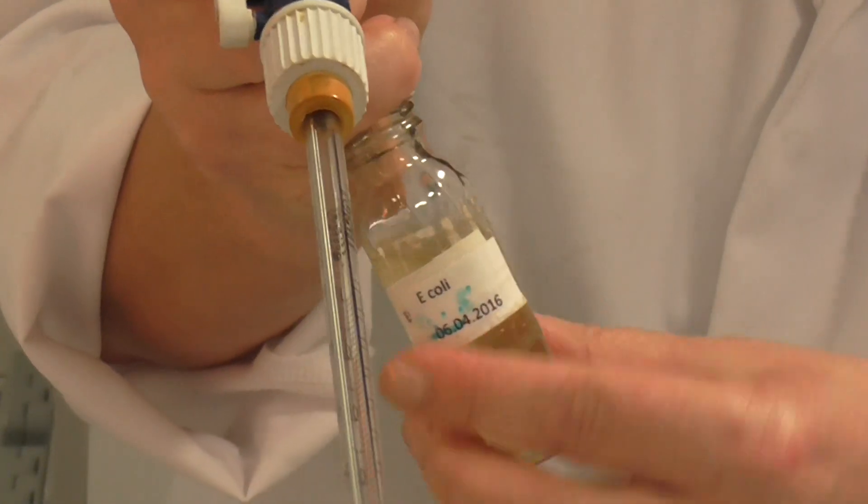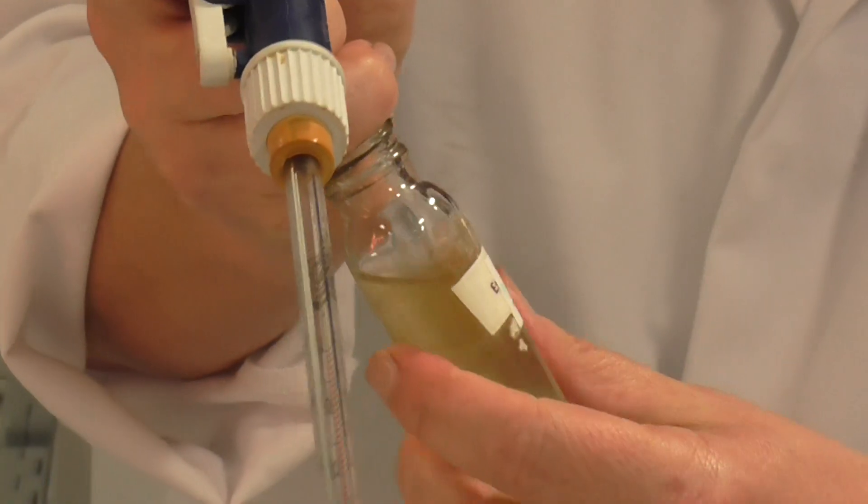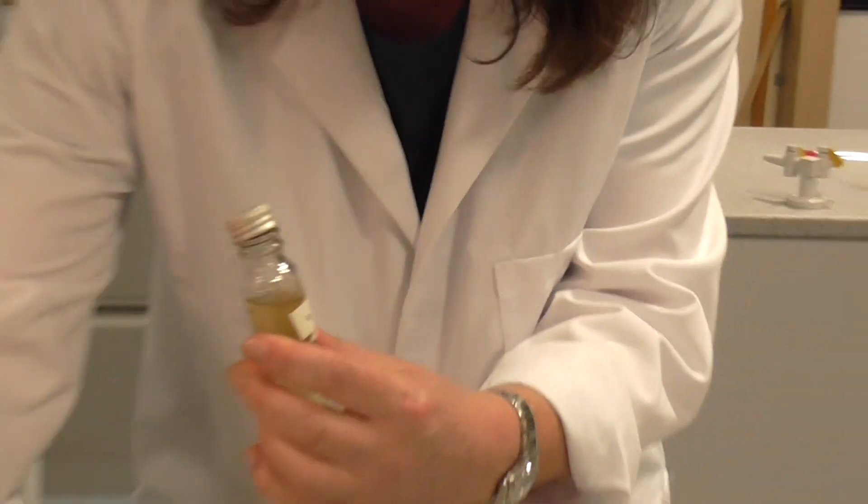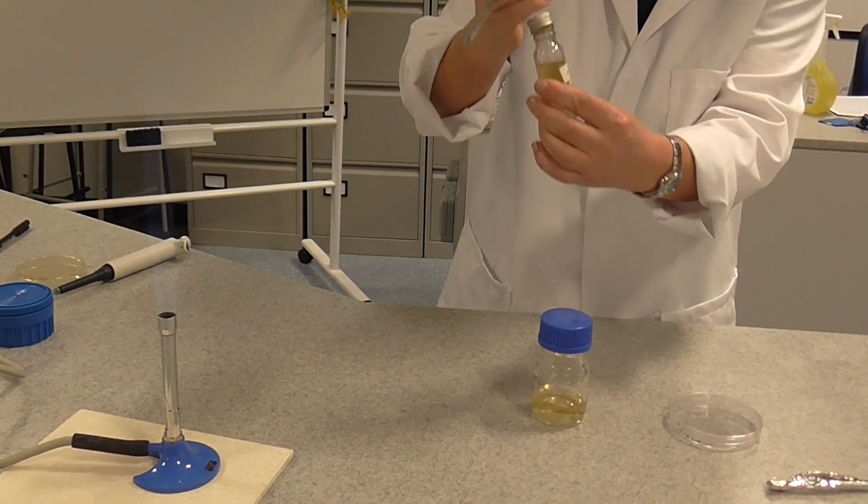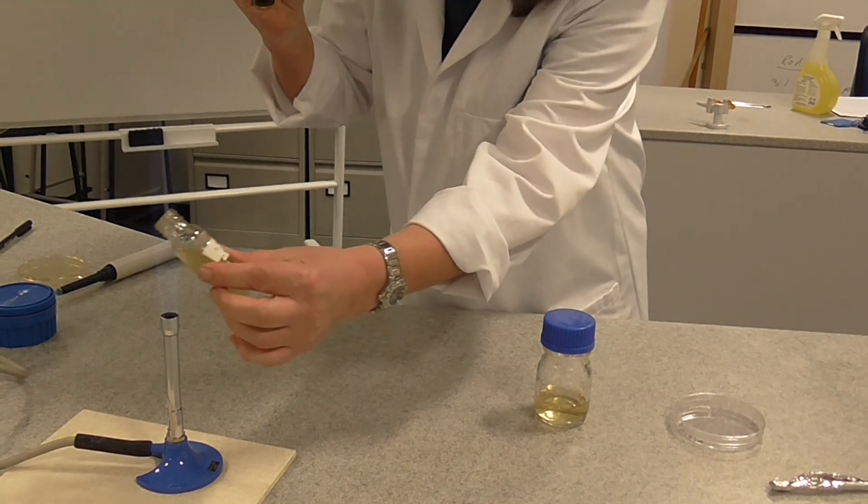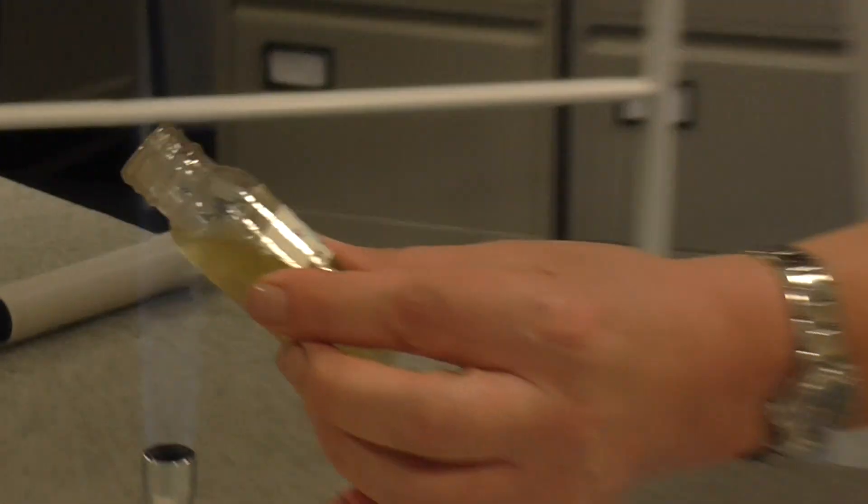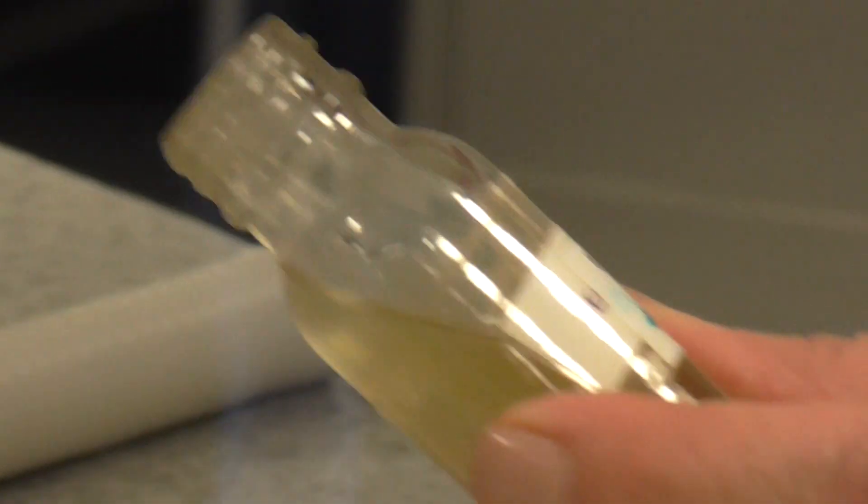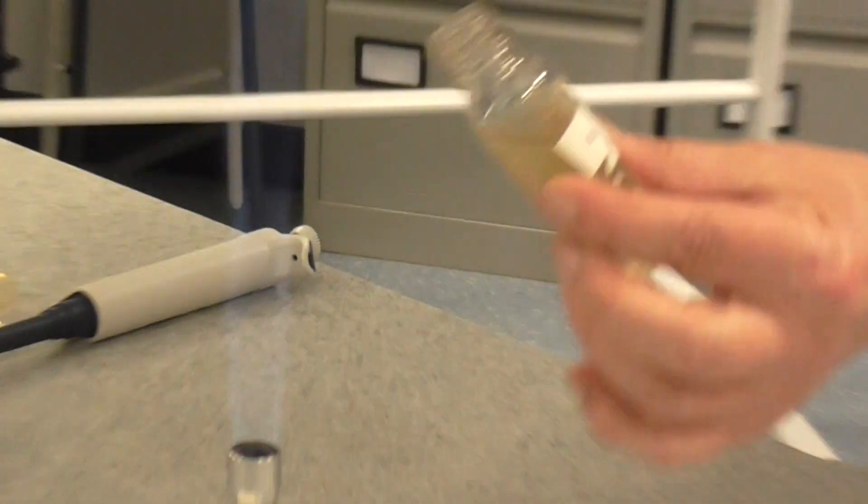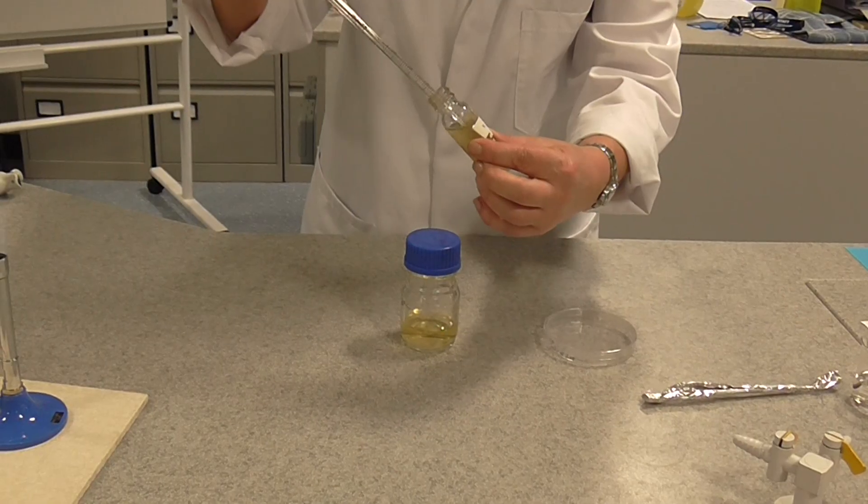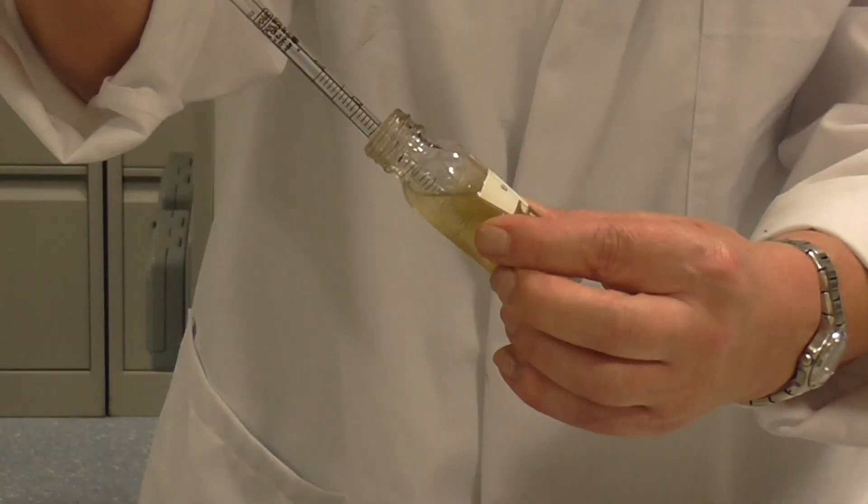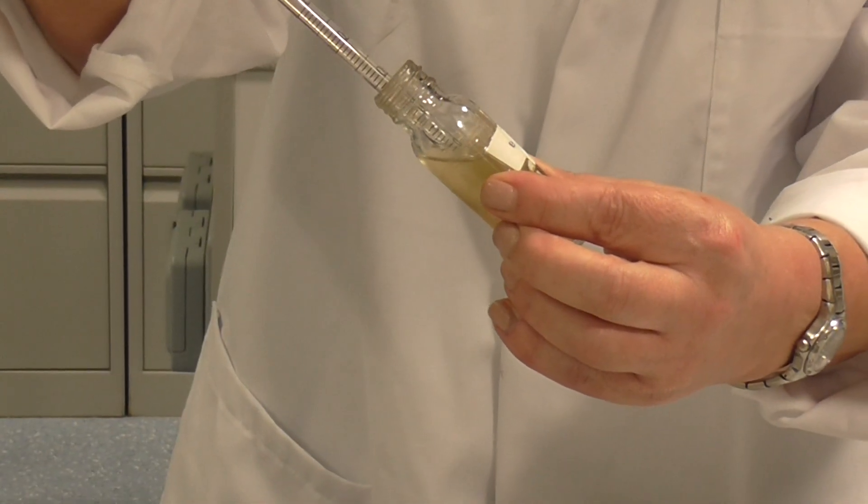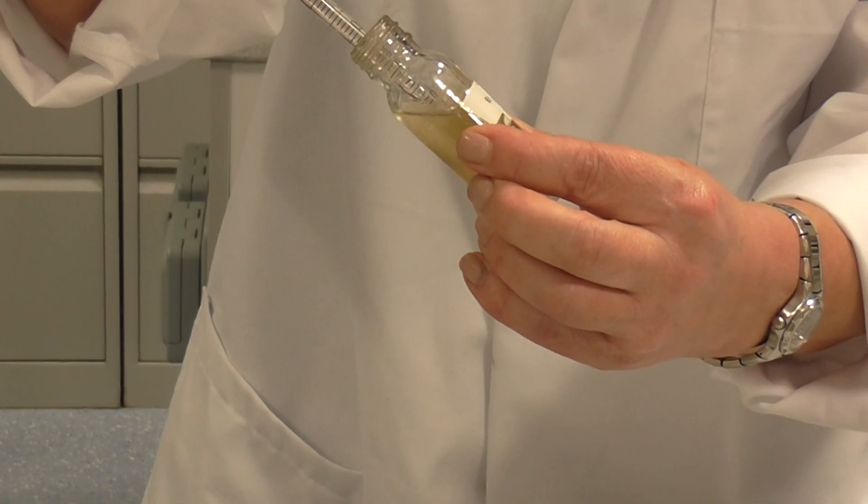We're going to put the flame on hot and we're going to flame the top. This is to kill off any bacteria that might be on dust that's getting into the neck of the bottle there. The next thing I'm going to do, I'm going to withdraw exactly one centimetre cubed of bacterial suspension.